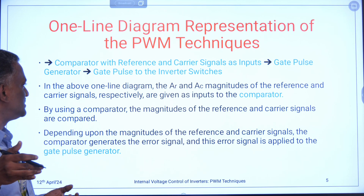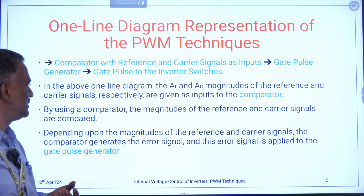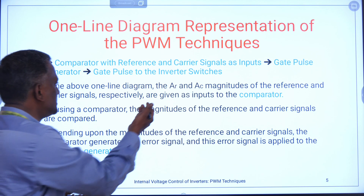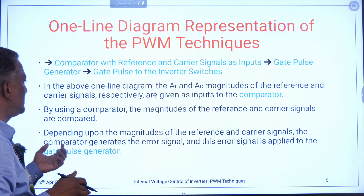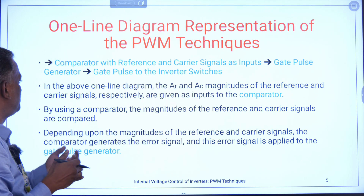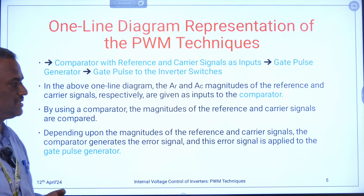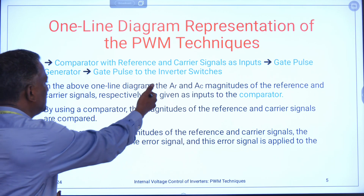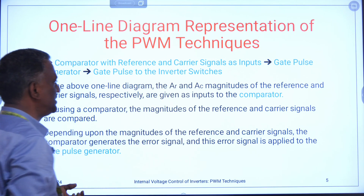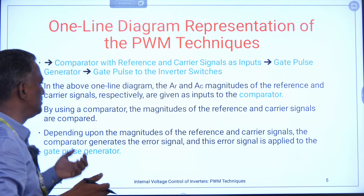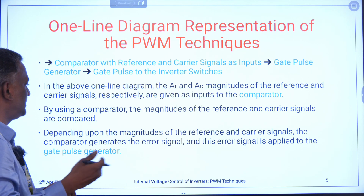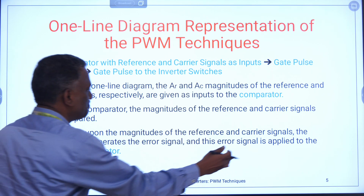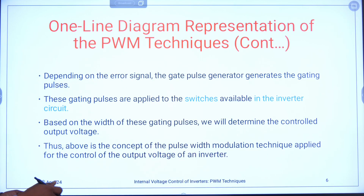Here, I am going to take two amplitudes — one is the reference amplitude, which is AR. I am going to take these two amplitudes and put them inside my comparator. The comparator will compare these two signals: AR which is the reference, and AC which is the carrier. Both will be compared. After comparing, an error will be generated. That error in turn will be given to the pulse generator. The pulse generator in turn will generate the pulse, which in turn will be given to the switches available in the inverter circuit.